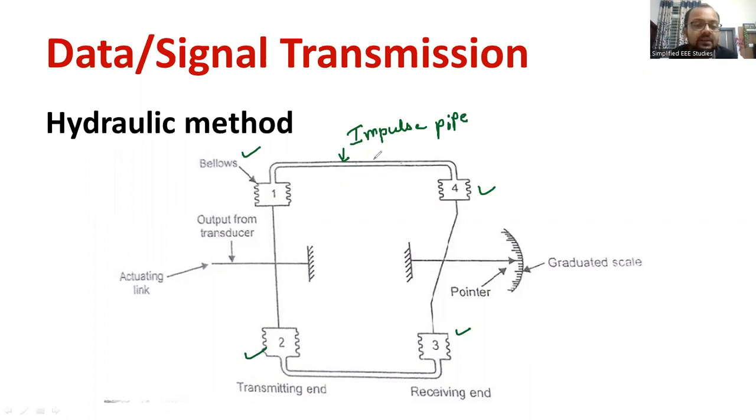And also, the bellows have been divided into two segments. First one is these two bellows, bellows one and two. That belongs to the transmitting end. The signal needs to be transmitted from one point to another point. That is our ultimate target. So, the two sections of bellows are available. One is a transmitting end. Another is a receiving end.